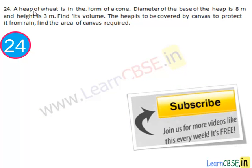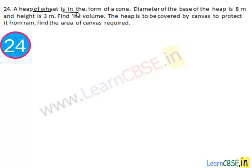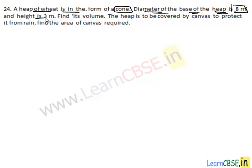Let's move to the next question. In this question, a heap of wheat is in the form of a cone. We are given the diameter of the base circle of the cone is 8 meters and its height is 3 meters. We have to find its volume, and also the heap is covered by a canvas to protect it from rain, so we have to find how much area of canvas is needed to cover the cone. That means we have to find the surface area and volume of the cone.